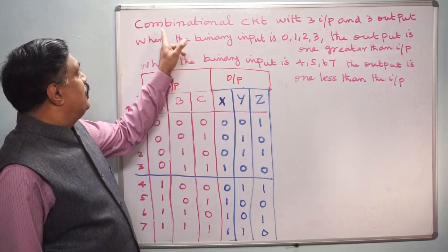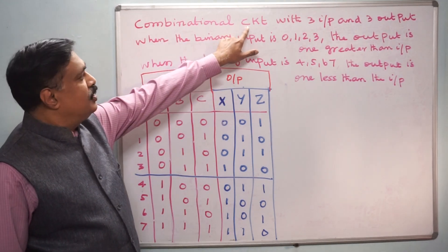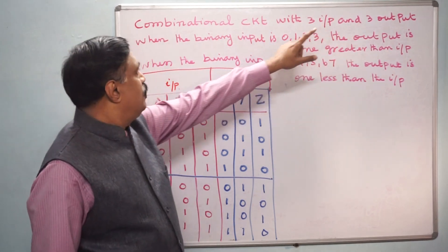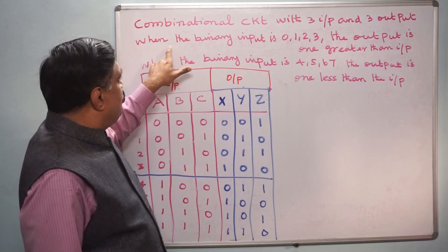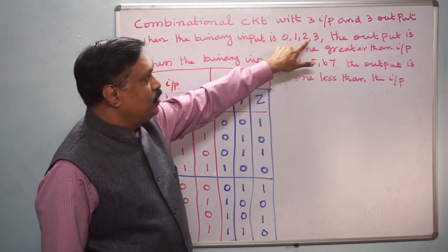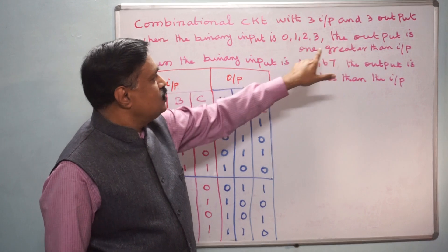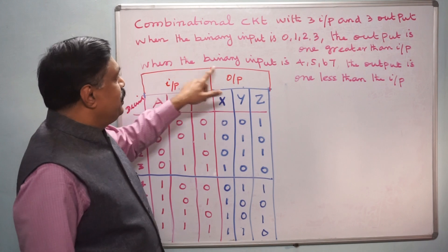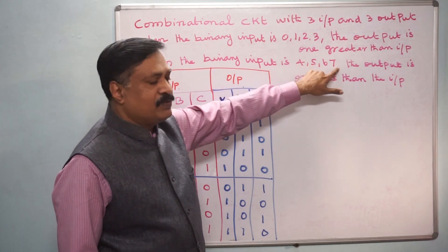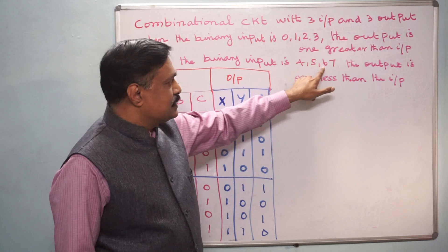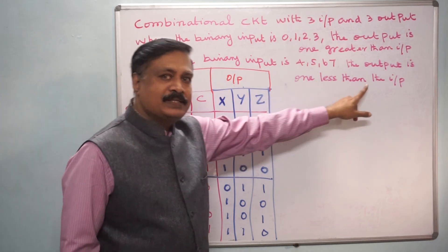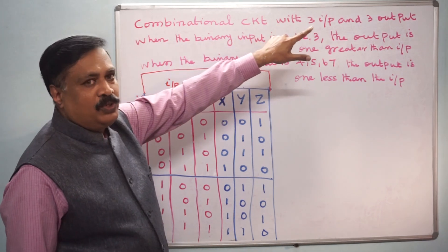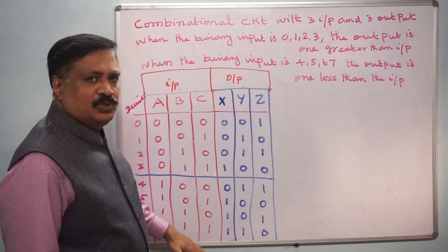Today we are going to see a combinational circuit with 3 inputs and 3 outputs. The output is: when the binary input is 0, 1, 2, 3, the output is 1 greater than the input. And when the binary input is 4, 5, 6, 7, the output is 1 less than the input. This is a 3-input, 3-output circuit, and this is the truth table.